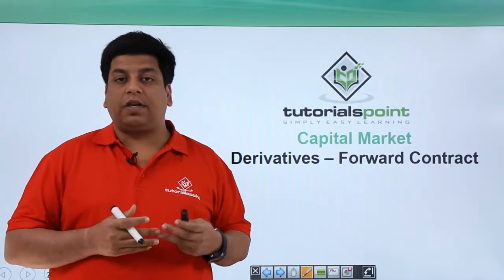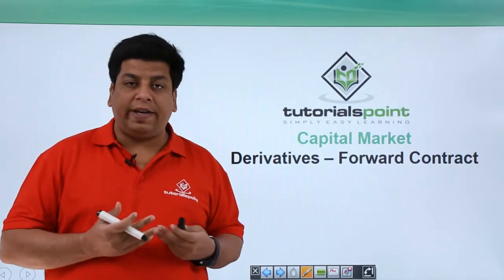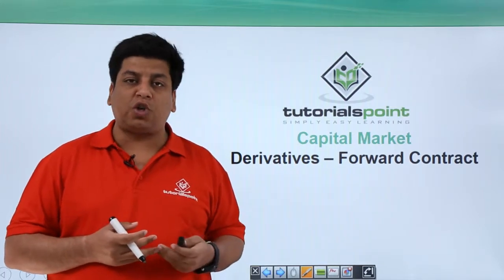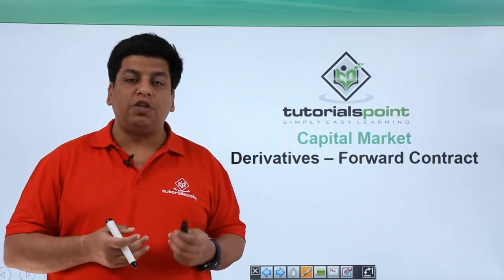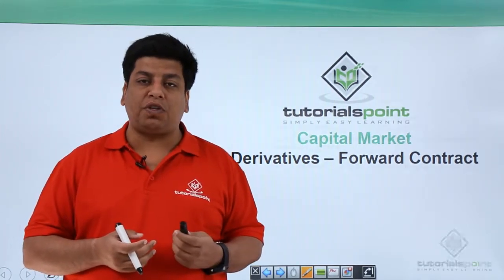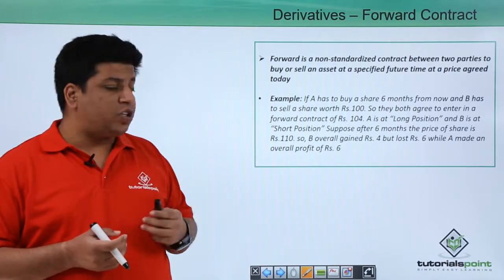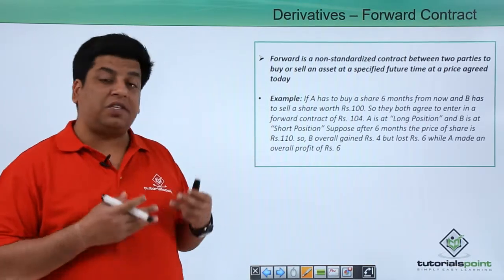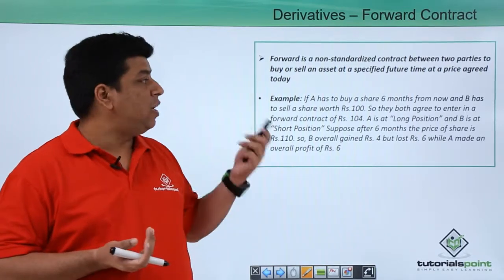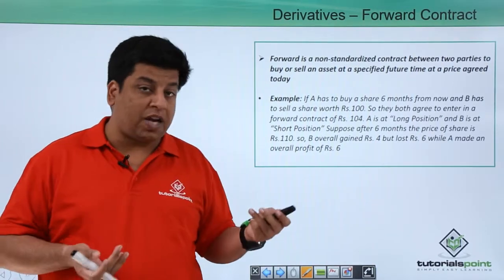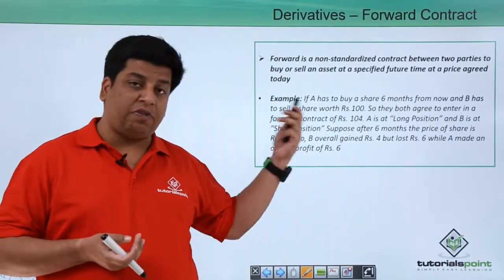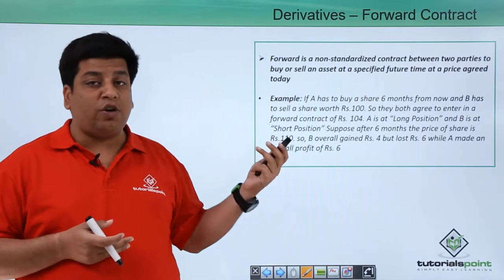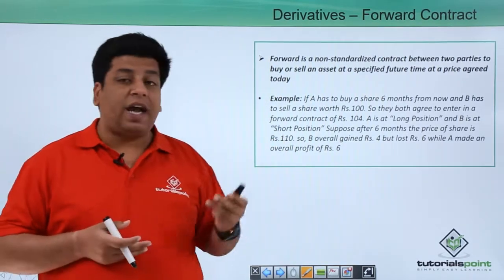Let's understand the first type of derivative, which is a forward contract. A forward contract is a non-standardized contract since it is customized in nature and is non-marketable. It is an agreement between two parties to buy or sell an asset at a